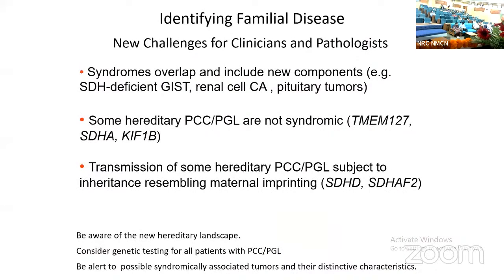For identifying familial disease, there are especially new challenges for clinicians and pathologists because syndromes overlap and include new components such as SDH-deficient GIST, renal cell carcinoma, and pituitary tumors. In addition, some hereditary pheochromocytomas and paragangliomas are not syndromic — for example, those caused by hereditary mutations of TMEM-127, SDHA, or KIF-1B are usually solitary tumors without other accompanying manifestations.